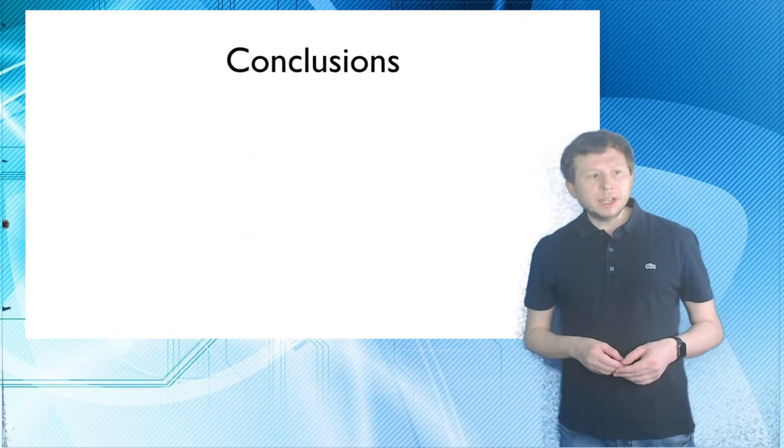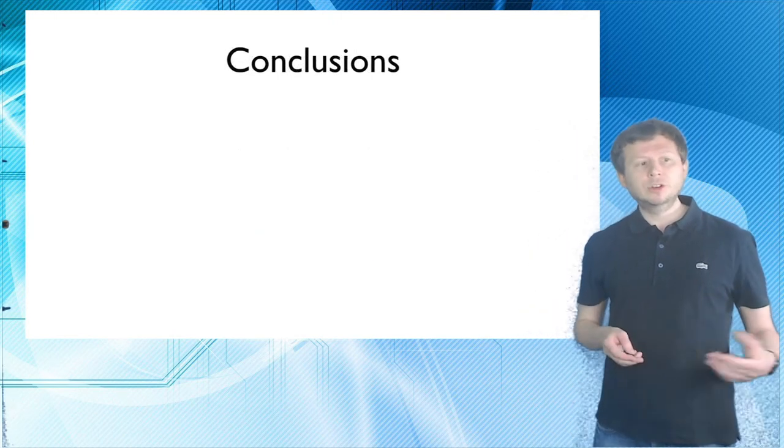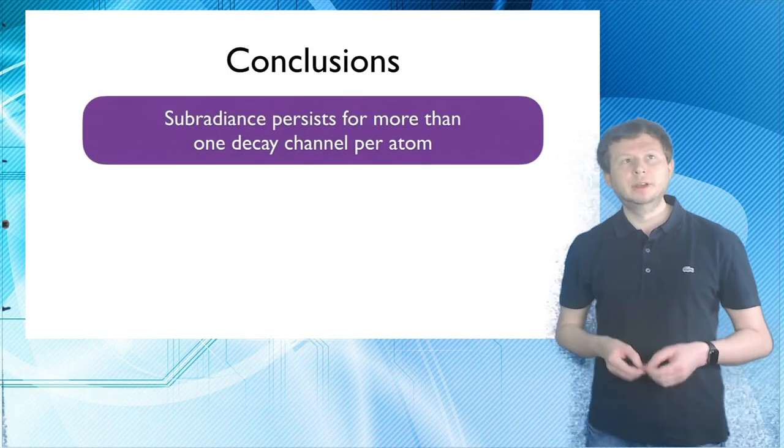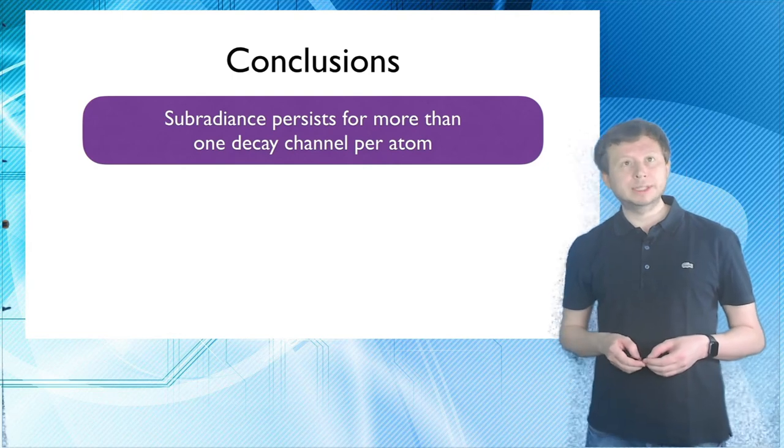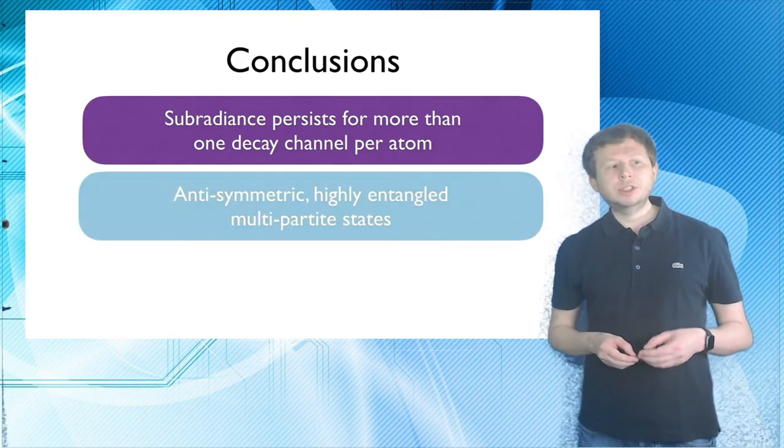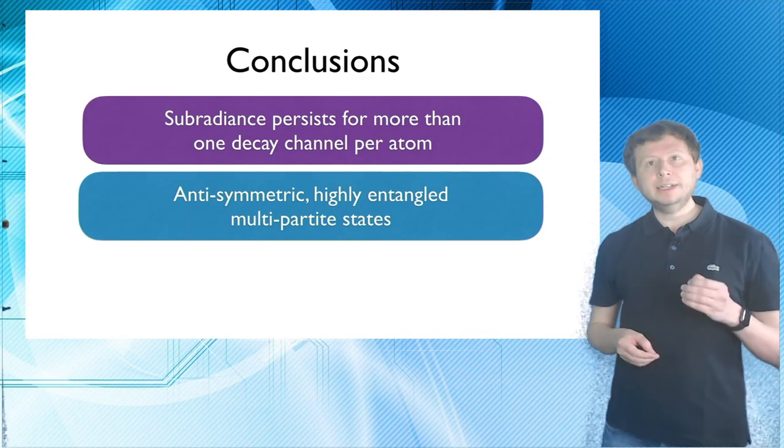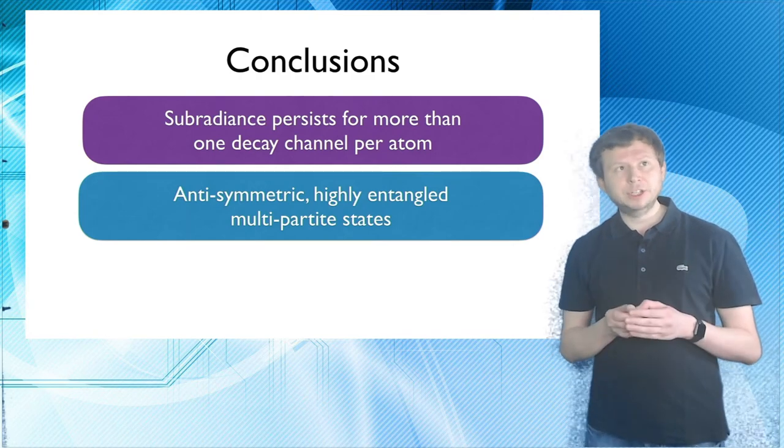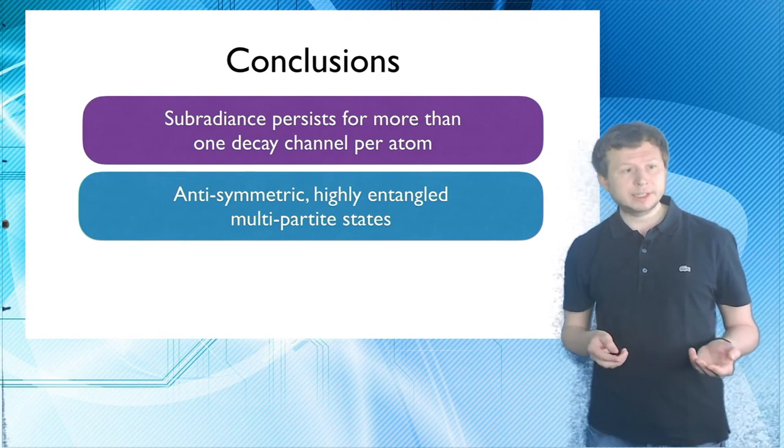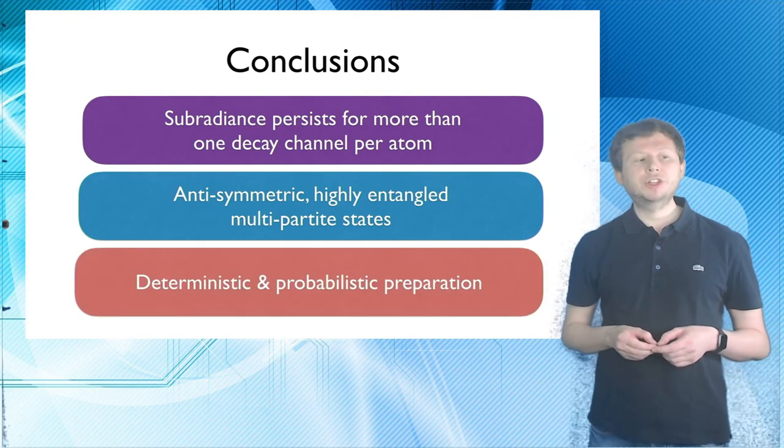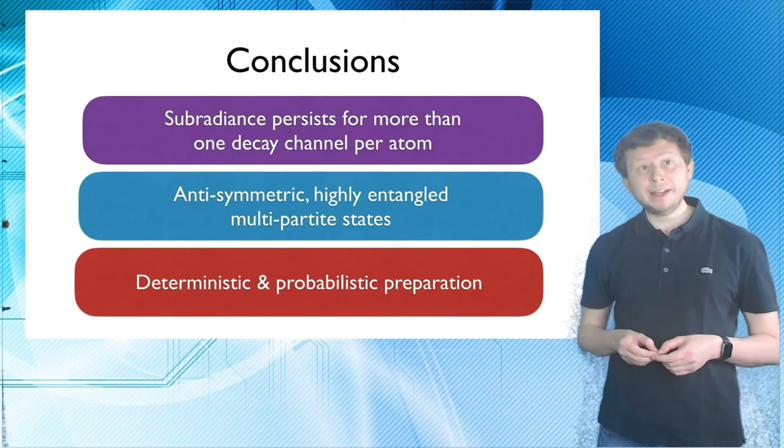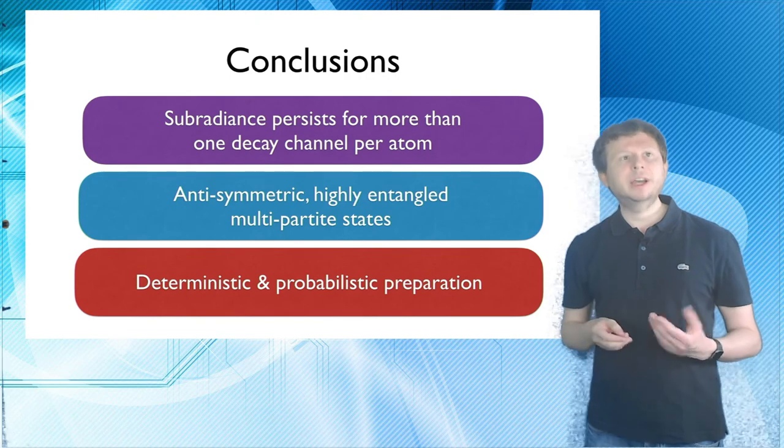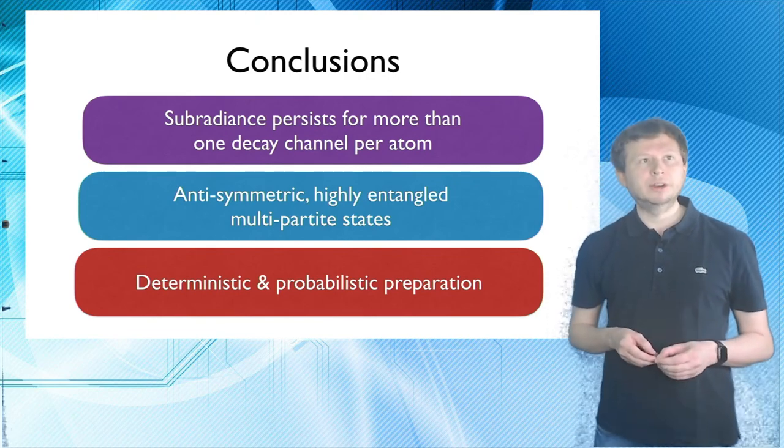All right. With this, I'm actually already at the end. And to conclude, I would like to summarize that subradiance can persist in systems which feature more than one decay channel. For example, those subradiance states that show up here are highly anti-symmetric and highly entangled states, multi-partite states that is. And lastly, I've shown you that you can actually prepare and use those states both probabilistically in a quantum optics kind of way and deterministically in a quantum information kind of way.